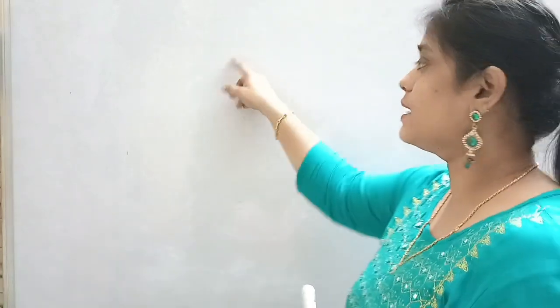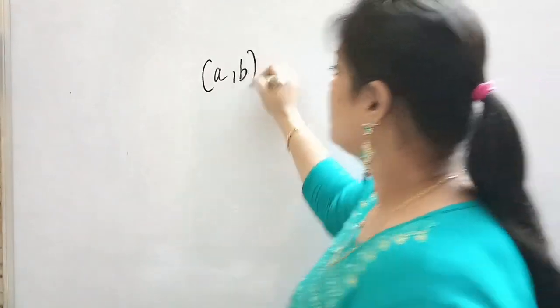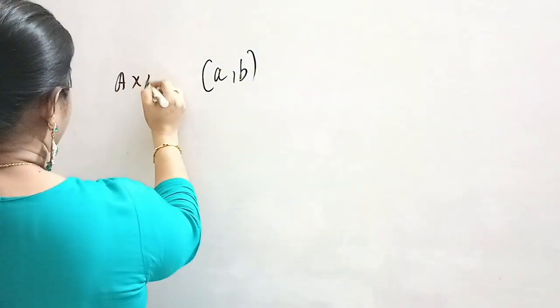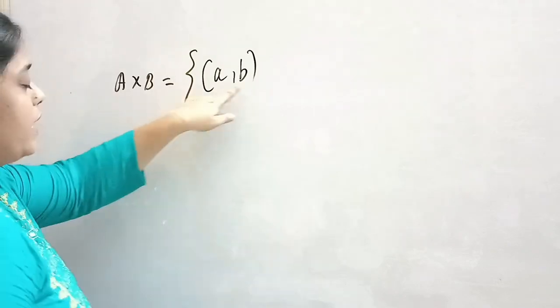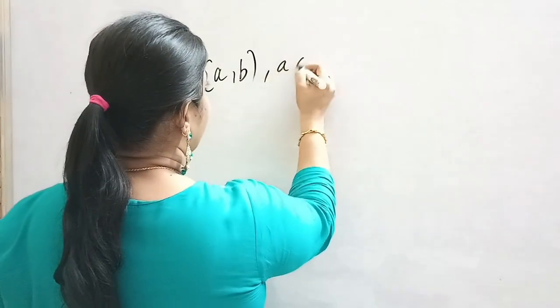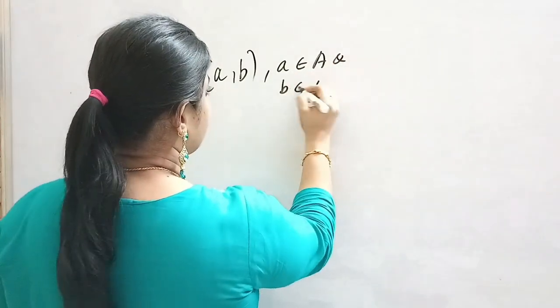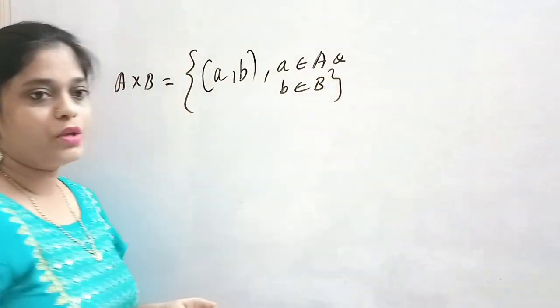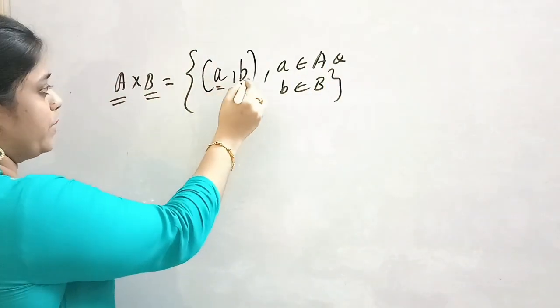A cross B means the set of all ordered pairs (a, b) — small a comma b — where a belongs to the first set and b belongs to the second set. So first element is A, second element is B. The order is maintained.